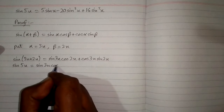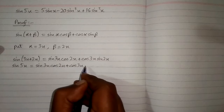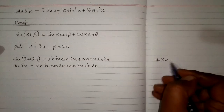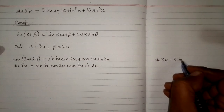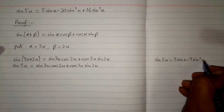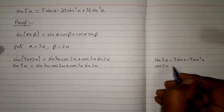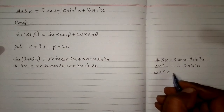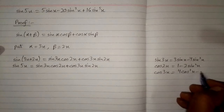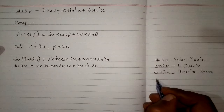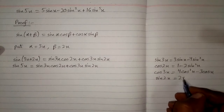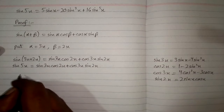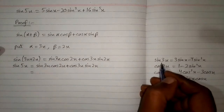So sine 5x is equal to sine 3x cos 2x plus cos 3x sine 2x. Now sine 3x is equal to 3 sine x minus 4 sine cubed x, and cos 3x is equal to 4 cos cubed x minus 3 cos x, and sine 2x is equal to 2 sine x cos x.